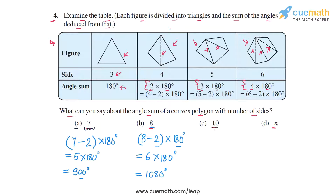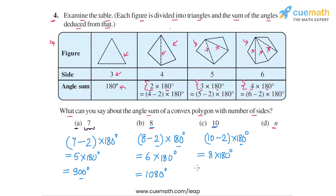For a polygon with 10 sides, the number of triangular parts is 10 minus 2 = 8. Multiplying by 180 degrees gives 8 × 180 = 1440 degrees.